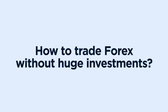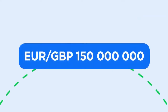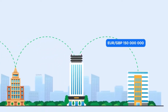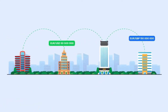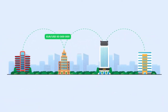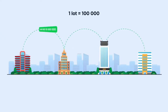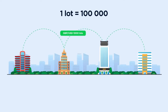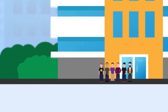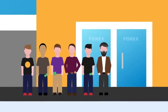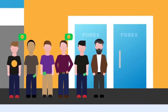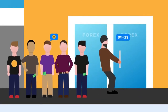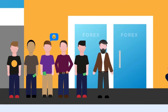How to trade Forex without huge investments? The main market players are constantly exchanging hundreds of millions of currencies. To make calculations faster and easier, they measure these amounts in lots. One standard lot is equal to 100,000 units of a base currency. For a long time, the lot size was a minimum trade volume that made Forex an exclusive playground for central banks and financial institutions. Most individual traders couldn't trade such huge amounts of currency.